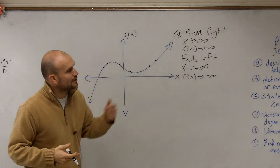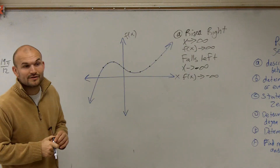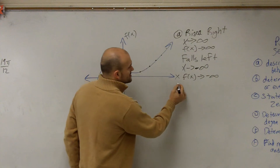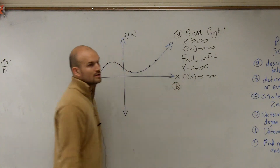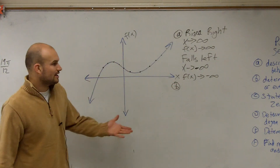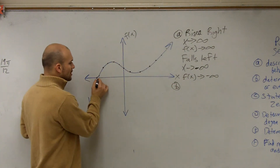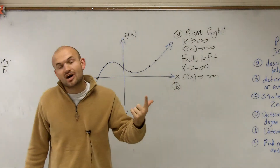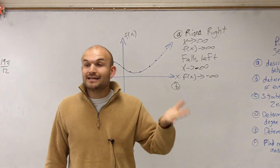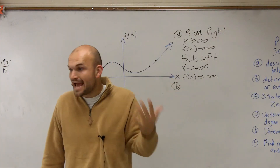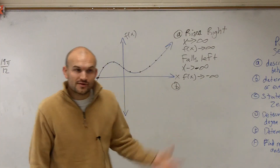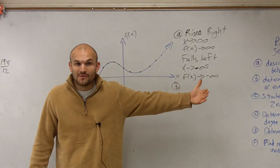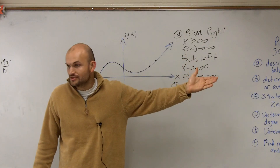So now the next thing we want to look at is to determine if we have an odd or even degree. Determining odd and even degrees means we need to look at this and determine the number of zeros. Here we look at our number of zeros, and we have one zero. One is an odd number, right? And remember, we talked about odd and even functions — if it's odd, it has to have an odd number of degrees. So therefore, if we have one odd zero, we have to have an odd degree function.